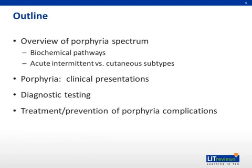This talk will briefly describe the porphyrias, which are eight diseases that are all closely related at the biochemical level but have diverse clinical presentations. We will discuss hemoglobin synthesis as the biochemical basis for the generation of toxic metabolites which cause porphyria. Diagnostic testing and treatments for and prevention of porphyria will also be discussed.